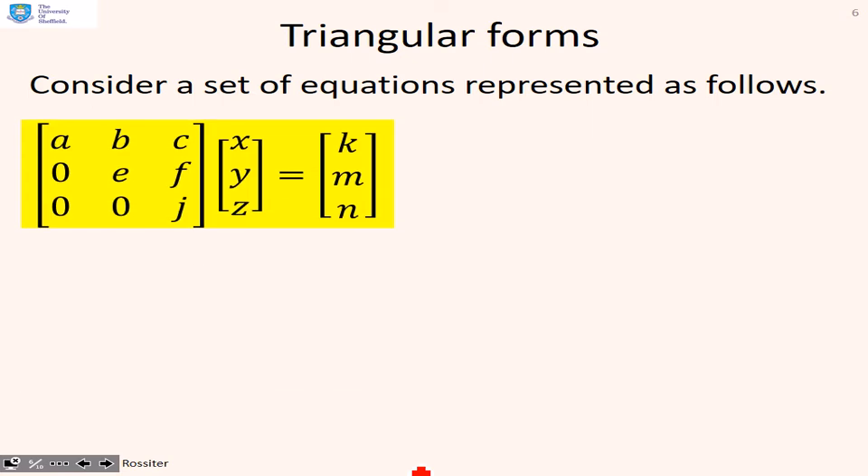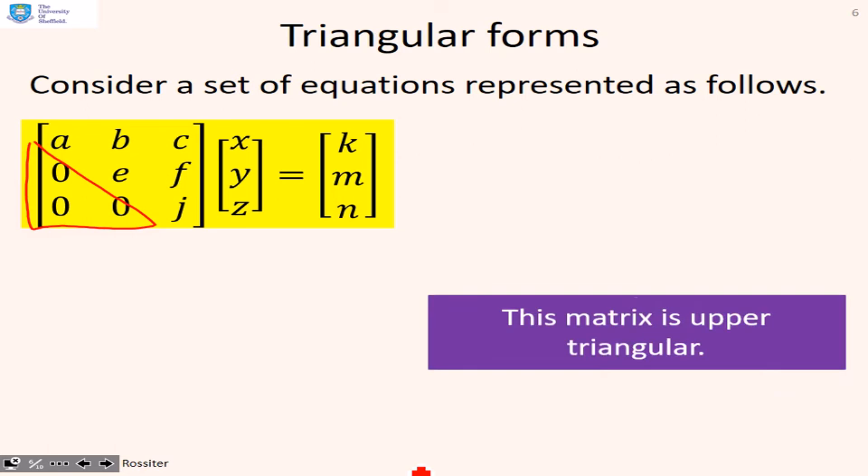So your solution technique has actually said, how do I make my matrix of coefficients upper or lower triangular? Consider a set of equations represented as follows. And you'll see in this particular case, I've made the matrix upper triangular straight away. I can now solve these variables very quickly. So I can use the third row to solve for z by inspection.